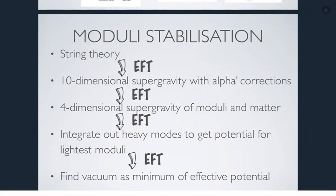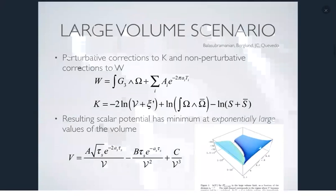I want to talk about a particular example of moduli stabilization — the Large Volume Scenario — and then think about whether holographic techniques can analyze whether it is consistent. The Large Volume Scenario, which I developed together with Vijay Balasubramanian, Perber, and Fernando Paredo about 15 years ago, stabilizes the extra dimensions at exponentially large values. If you have a very large volume, you get a way of generating hierarchies — which is good if you're interested in the phenomenological side of string theory.